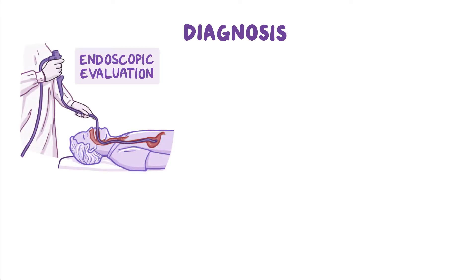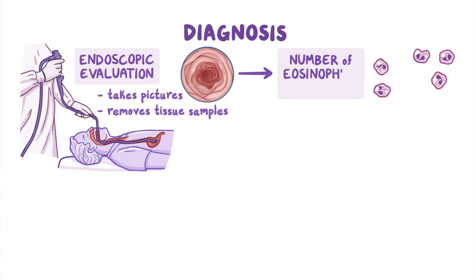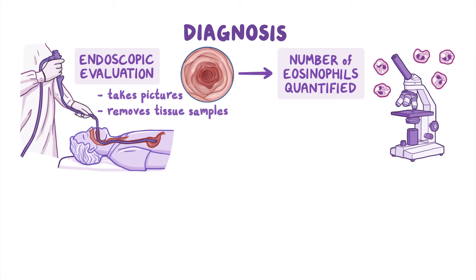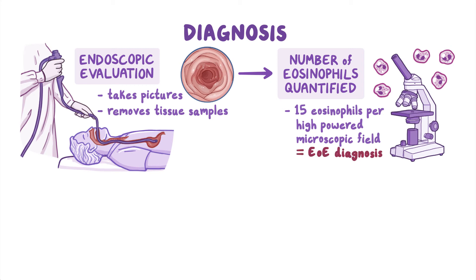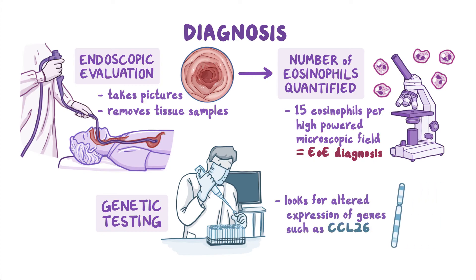Eosinophilic esophagitis is diagnosed based upon endoscopic evaluation in a patient with clinical symptoms. During the upper endoscopy, a procedure in which a small flexible tube with a camera is placed down a person's throat to take pictures and remove tissue samples of the upper gastrointestinal tract and esophagus, the number of eosinophils in the esophagus are quantified by a pathologist. If the level is at least 15 eosinophils per high-powered microscopic field, then EOE is diagnosed. Testing can also be done to determine if there is altered expression of genes such as CCL26 that play a role in eosinophilic esophagitis.